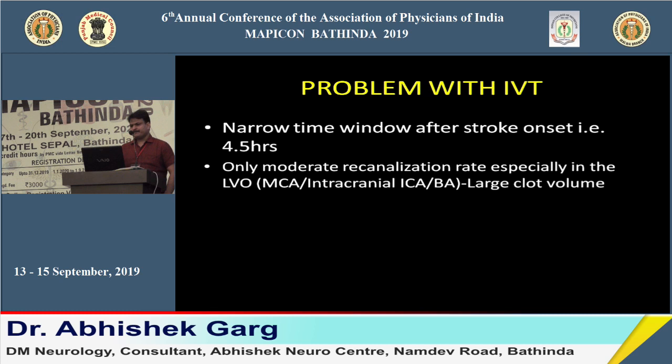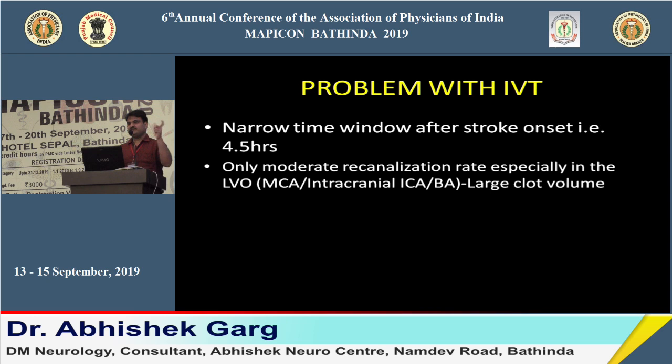Problems with intravenous thrombolysis include a narrow time window of only 4.5 hours, and failure to achieve recanalization in large vessel occlusion such as MCA or ICA. In these cases, IV thrombolysis is typically insufficient.